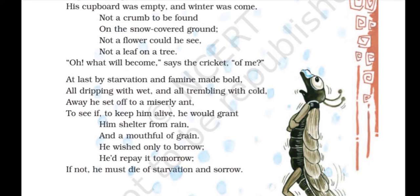So, hungry and cold because of the rain, he decided he'd go to the miserly ant. He would ask her to provide him shelter from the rain, or give him a little bit of grain — something to eat, something to save him. He didn't want it as a gift; he just wanted to borrow it, because his whole idea was that he would repay it. And if the ant didn't help him, he would have to die of starvation and sorrow.